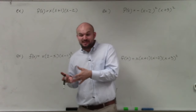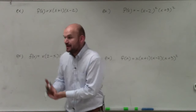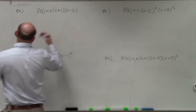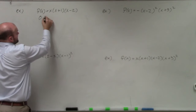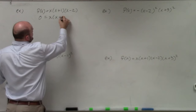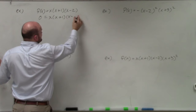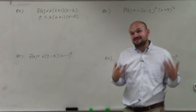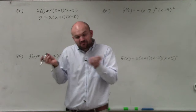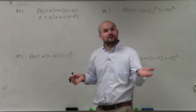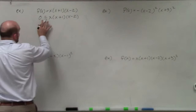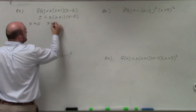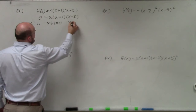The nice thing about having it in factored form is it's very easy to find the zeros. The zeros are basically when f(x) is equal to 0. Sometimes higher order polynomials are not easy to factor, so having it in factored form is nice. When we have a product equal to 0, we can apply the zero product property — setting each factor equal to 0 to identify the zeros.